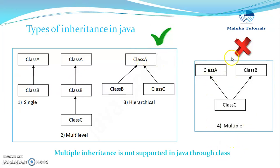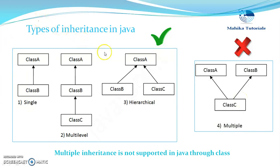There is one more type of inheritance supported by some languages like C++, and that is multiple inheritance. Multiple inheritance is where one subclass derives from more than one super class — for example, class C extends both class A and class B. This kind of inheritance is prohibited in Java; multiple inheritance is not supported in Java through classes. Only the first three — single, multi-level, and hierarchical inheritance — are supported in Java.